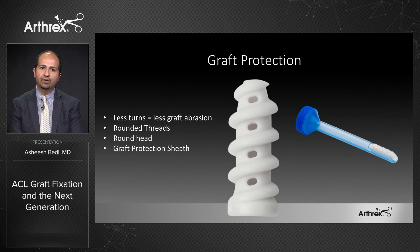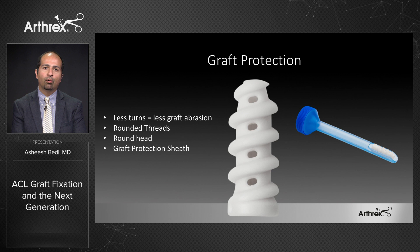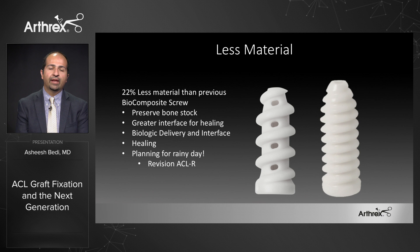One of the primary principles guiding interference fixation — particularly with soft tissue grafts but also for bone-tendon-bone grafts — is to protect our graft and the soft tissue interface. The fast thread design is key to this: the threads themselves are rounded so they avoid graft laceration and damage. The head is also rounded, so as you advance the screw to the final few turns of fixation, it offers less risk of laceration. A graft-protective sheath is also available, particularly useful as we place our femoral screw with bone-tendon-bone grafts.